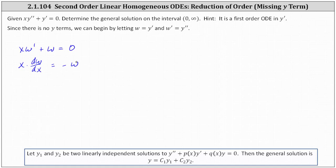which gives us equals negative w. And now let's multiply both sides by one over x, and multiply both sides by one over w. This gives us one over w dw dx equals negative one over x. And now we can think of multiplying both sides by dx, which gives us one divided by w dw equals negative one divided by x dx.